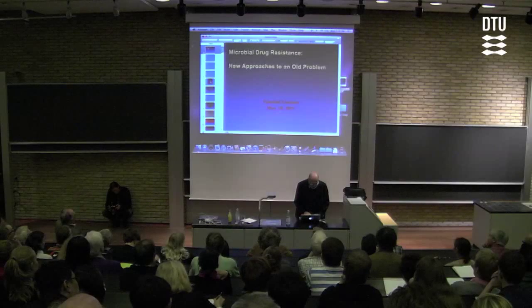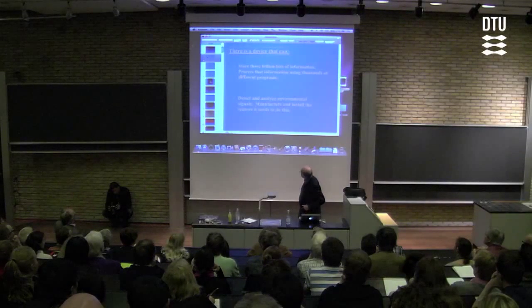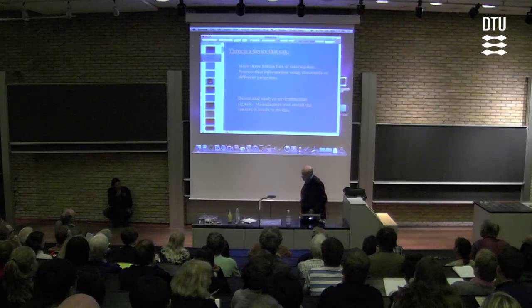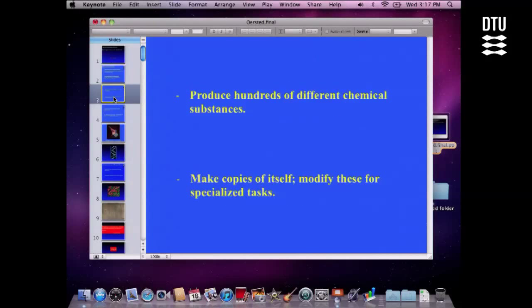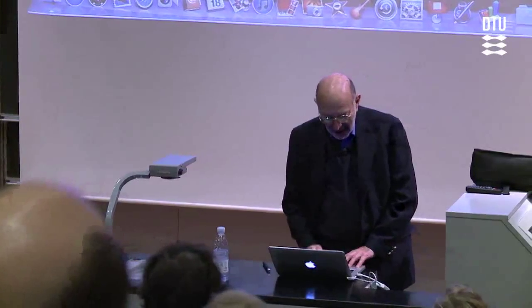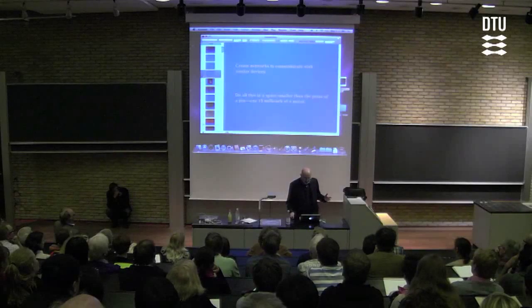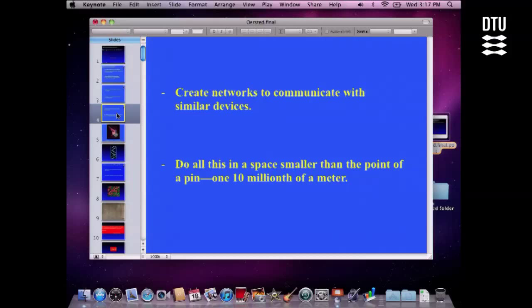Suppose I tell you that there's a device that can store 3 billion bits of information and process that information using thousands of different programs. That device can detect and analyze environmental signals. It can manufacture and install the sensors it needs to do this. Suppose I also said that device can produce hundreds of different chemical substances, make copies of itself, and modify these for specialized tasks.